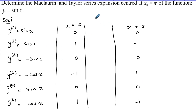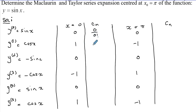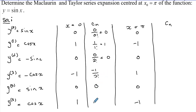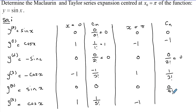Now, getting the c_n coefficients: for Maclaurin, we have 0/0! = 0, then 1/1! = 1, then 0/2! = 0, then −1/3!, then 0/4! = 0, then 1/5!. For Taylor centered at π, we have 0/0! = 0, then −1/1! = −1, then 0/2! = 0, then 1/3!, then 0/4! = 0, then −1/5!.